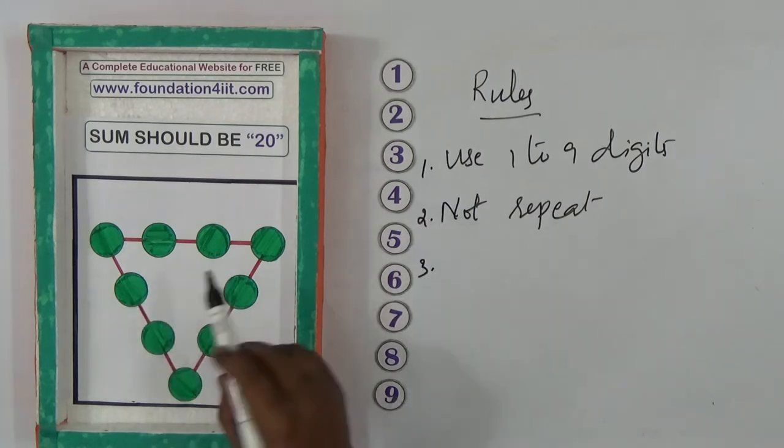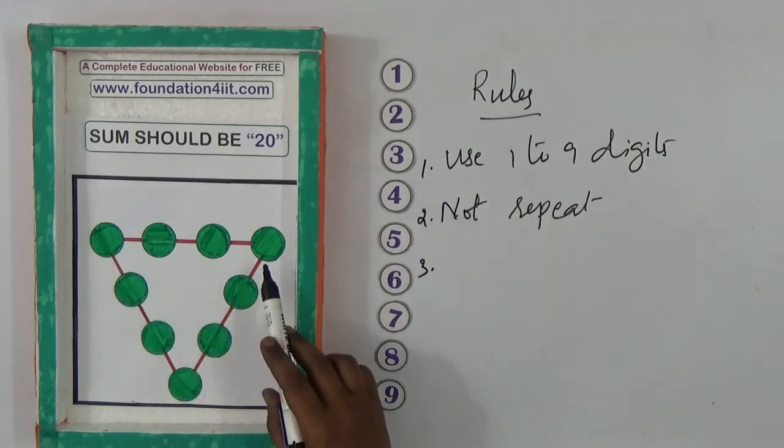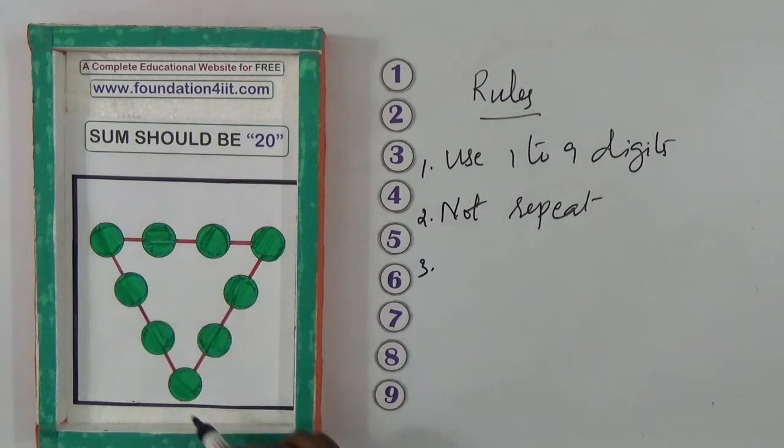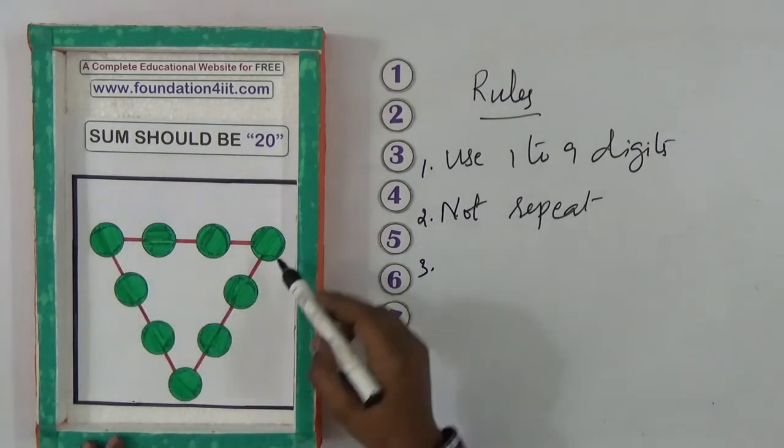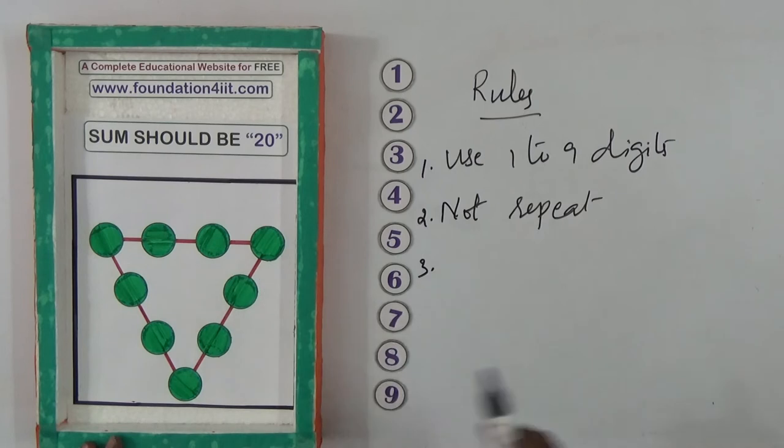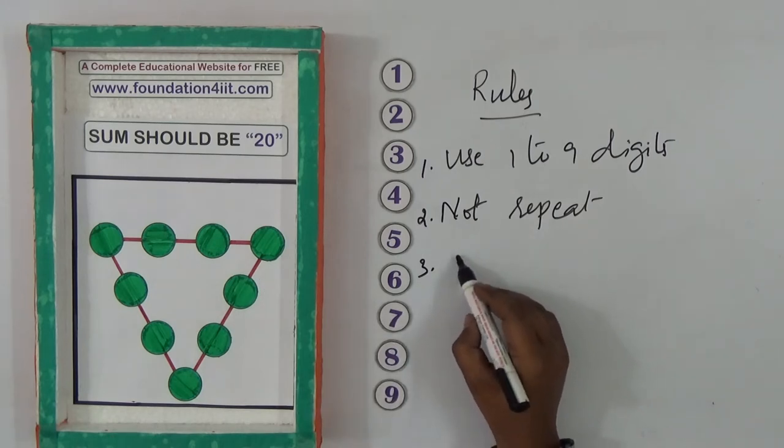Rule 2: Each straight line—when you add the four numbers—should equal 20. Some circles are common to multiple lines, but every straight line sum should be 20.